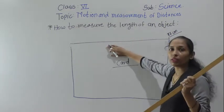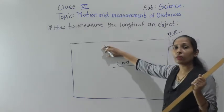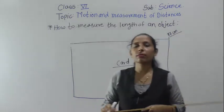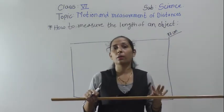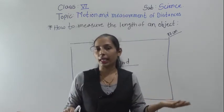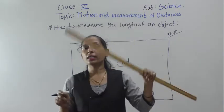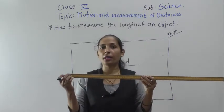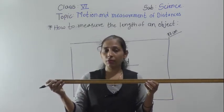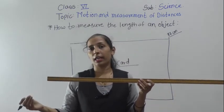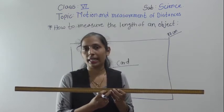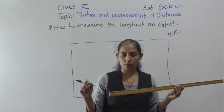It means the length of this card is 77 centimeters. So in this way, with the help of a ruler, a scale, or a measuring tape, we can measure the length of any object. The key thing to keep in mind is: the zero point of the scale should be on the left side, and we read the right side reading to get the exact length.